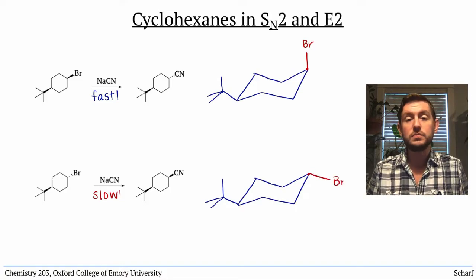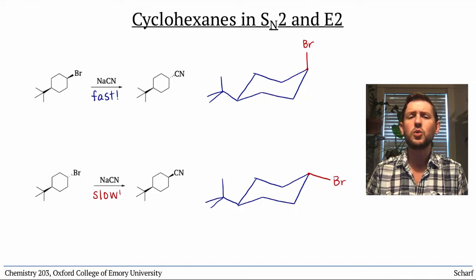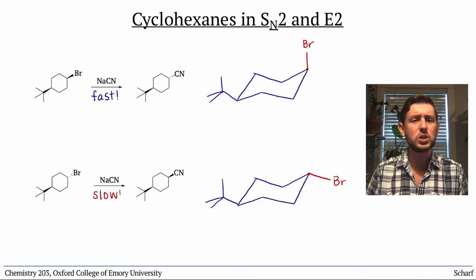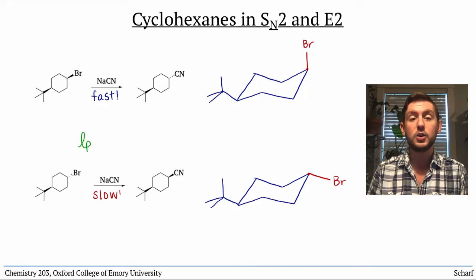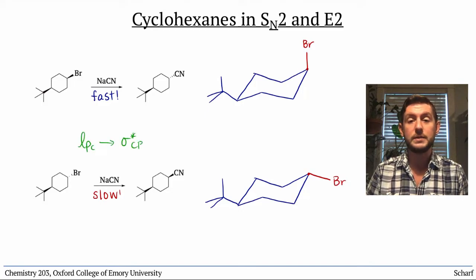Okay, so far so good, but why would the equatorial bromine react more slowly than the axial one? To understand this, we need to think about the molecular orbitals involved in the reaction. Both of these reactions involve the homo of cyanide, a lone pair on the negatively charged carbon, and sigma-star CBr.